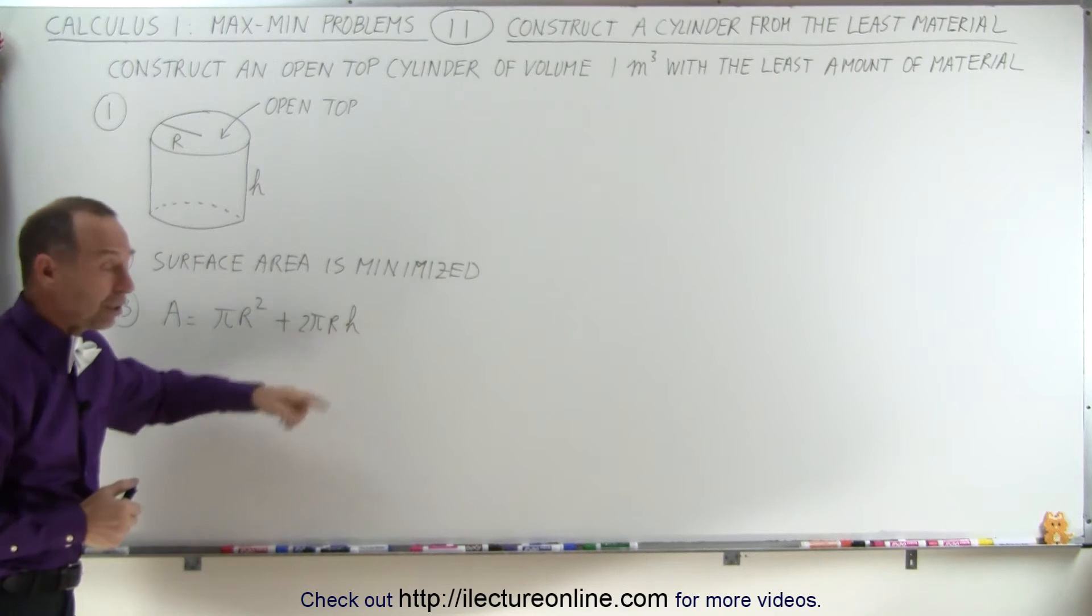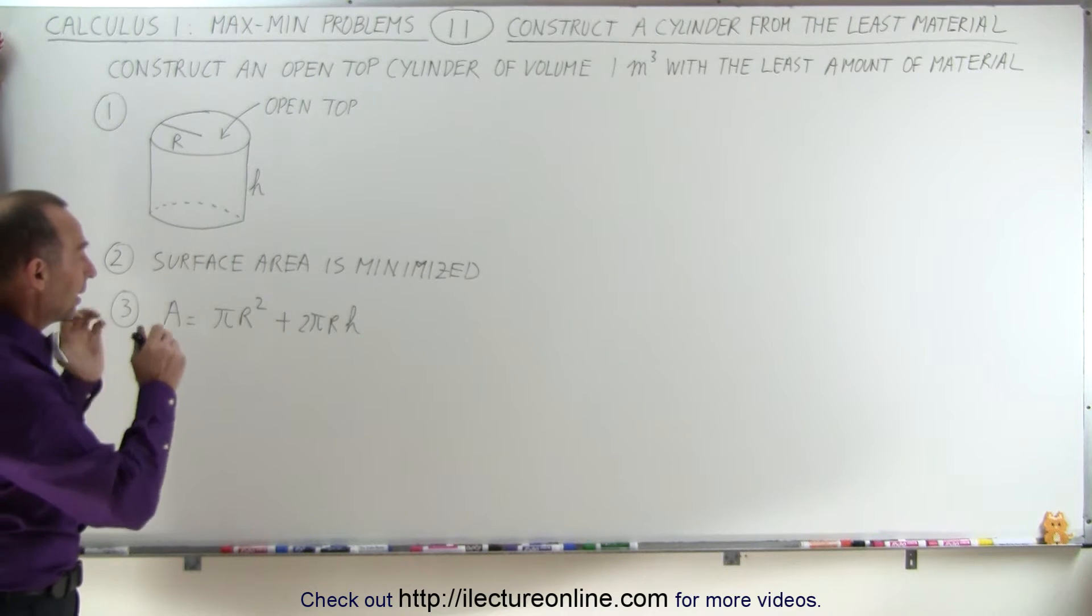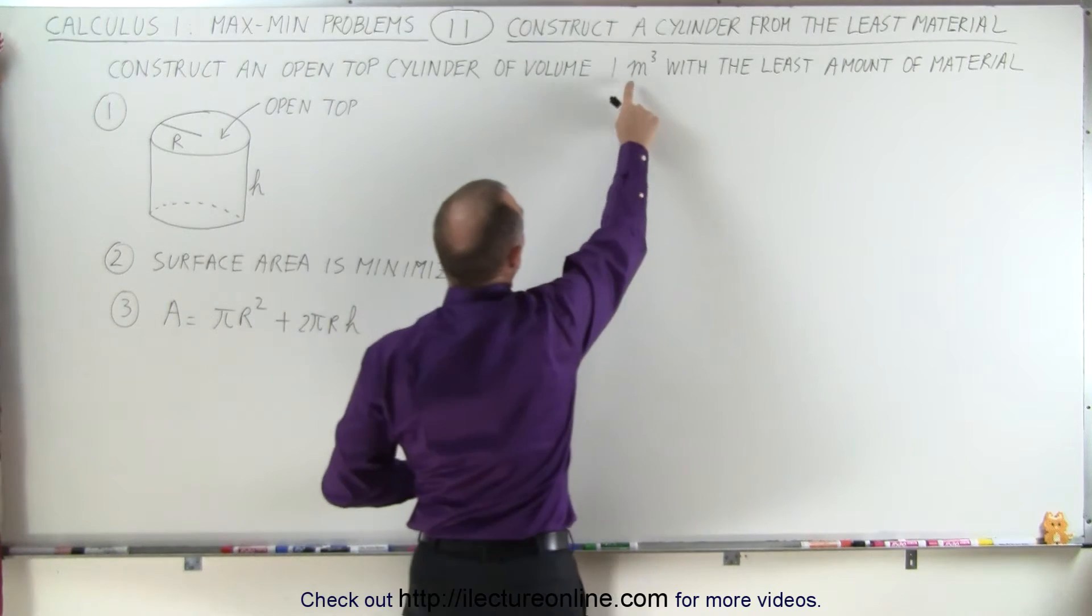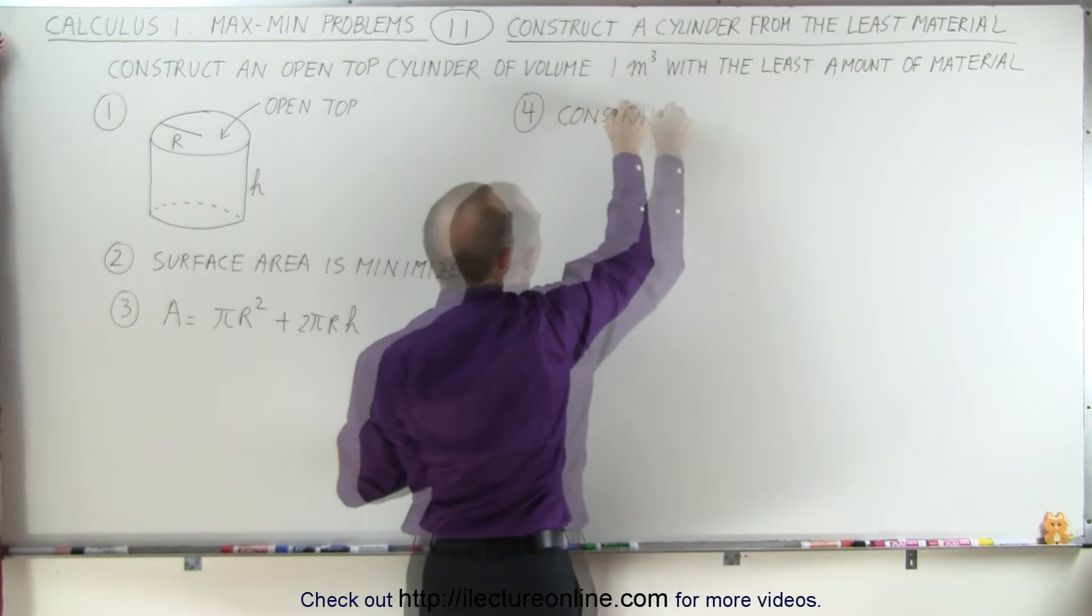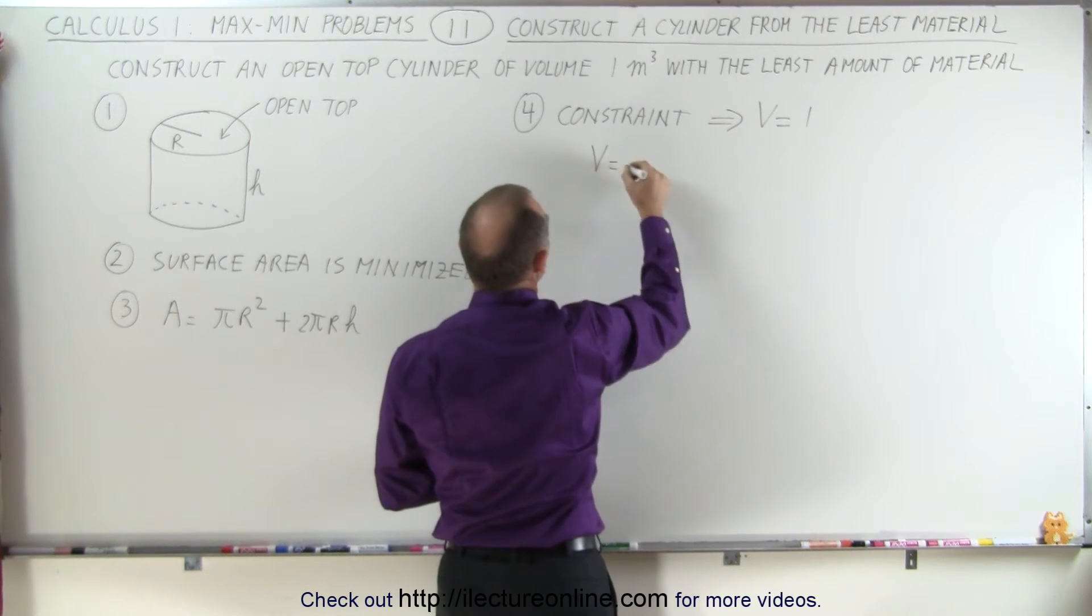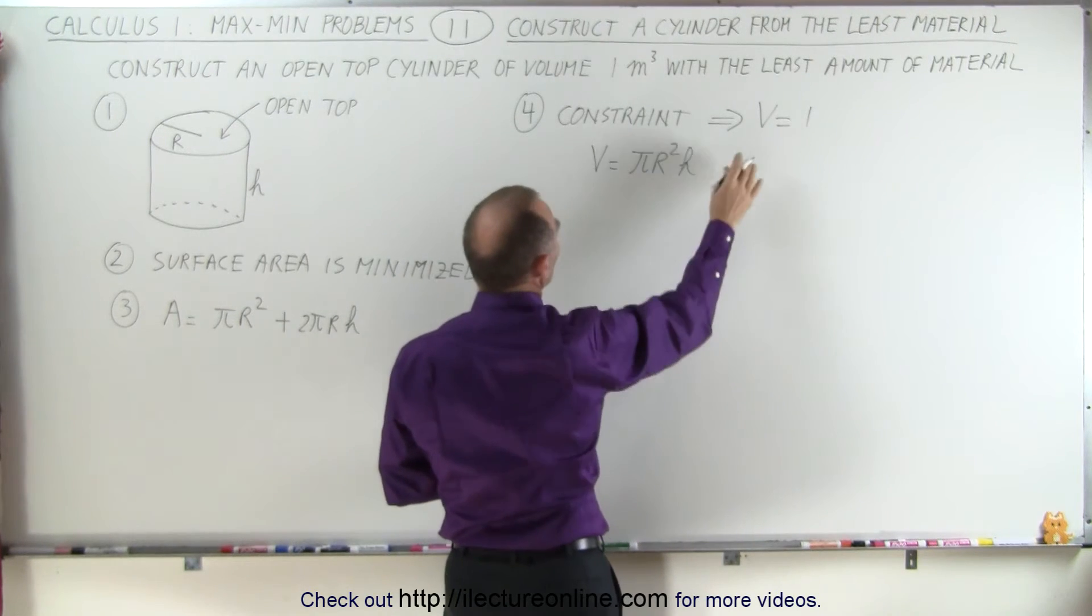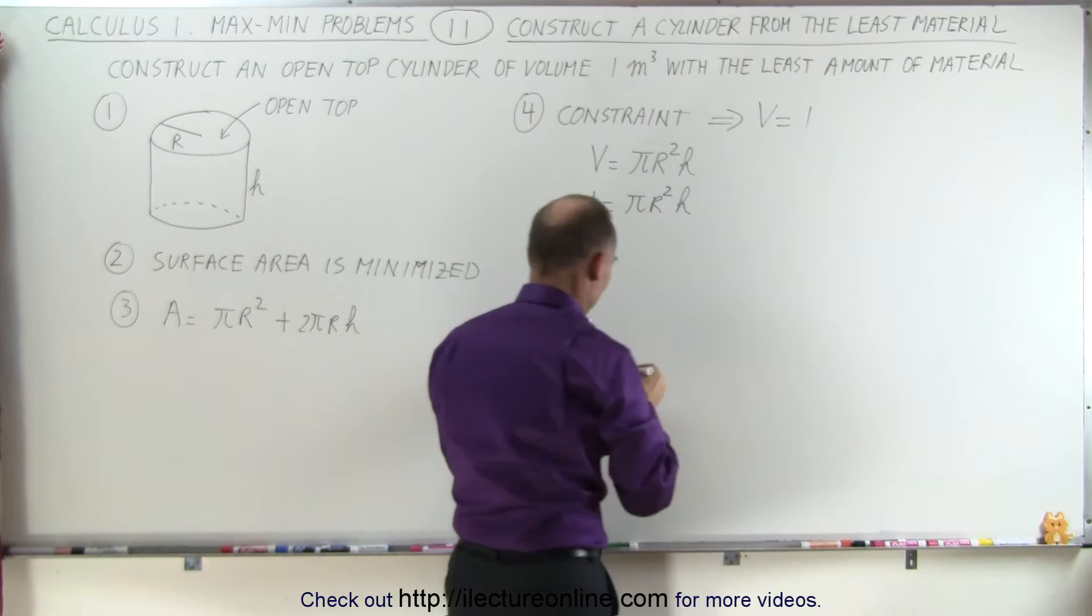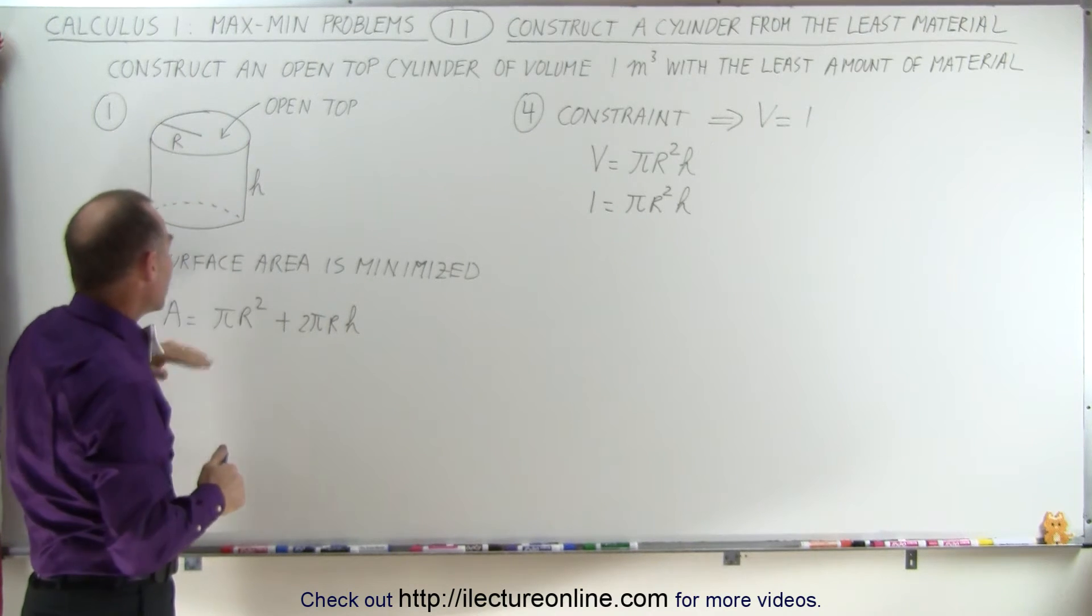Notice we have two variables, r and h, and they're both unknown. So the fourth step is we need to come up with some sort of constraint that allows us to relate r and h to one another, and the constraint is that the volume must be one cubic meter. The constraint tells us that the volume equals one, and of course the equation of the volume of a cylinder is equal to the area of the base times the height. Since the volume is 1, we have 1 equals pi r squared h. So there's the constraint, which allows us to eliminate one of the variables in the equation.